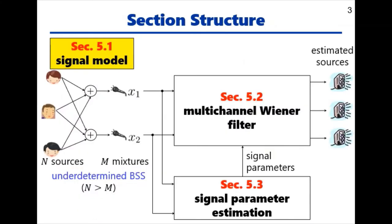This section is structured as follows. Section 5.1 describes the signal model. Section 5.2 describes source signal estimation using the multichannel Wiener filter. And finally, Section 5.3 is devoted to signal parameter estimation.